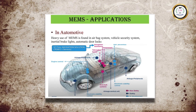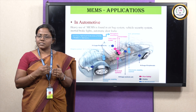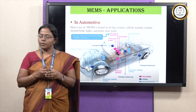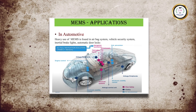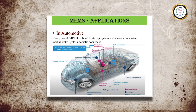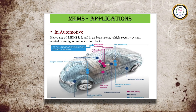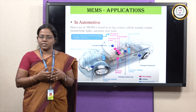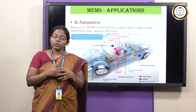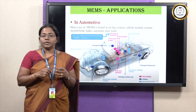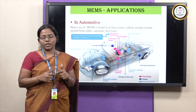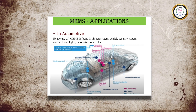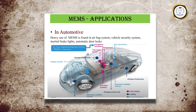MEMS also has applications in automobile industries. A very important application is the crash sensor — for example, an accelerometer. It consists of a mass in the middle layer. Whenever the car moves at a particular acceleration, the mass also responds to that acceleration; this movement of the mass is recorded by the sensor. In case of accidents, the acceleration level goes beyond the critical value, and the sensor transfers the information to the microprocessor, which in a microsecond activates the airbag. It is also used for vehicle security systems, inertial brake lights, and automatic door lock systems.